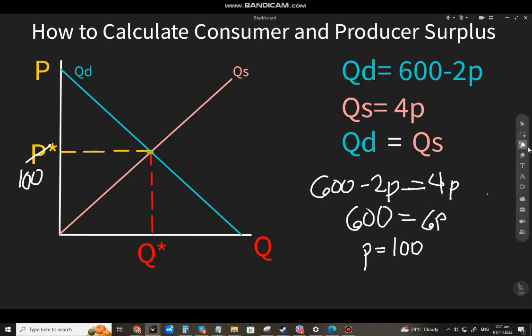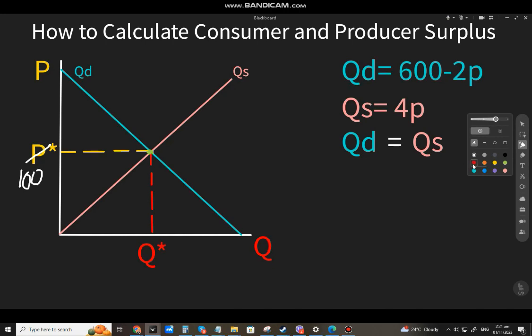Paano naman itong Q star? So, pag Q star naman, yung alam natin ang P is 100, di ba? I-substitute natin itong 100 dito sa QD or QS, either of the two. So, QS na lang. So, pag QS, that will be 4 times 100. So, that will be 400. So, ang Q star natin ay 400.